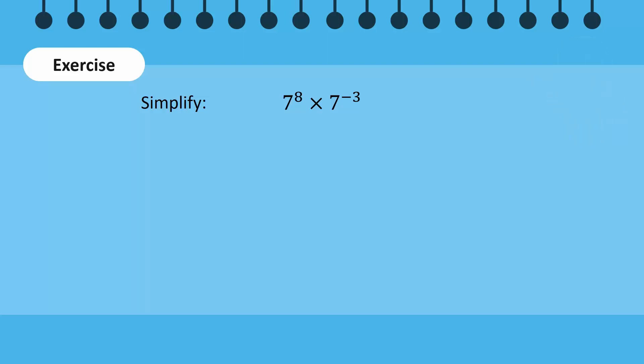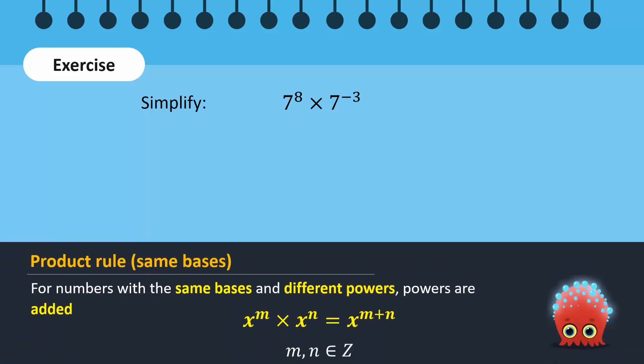Note that the bases in both numbers are the same. According to the exponents product rule, if the bases of the numbers are the same, the powers are added. 8 plus minus 3 is equal to 5. Hence, the answer is 7 raised to the power 5, which gives us this answer.